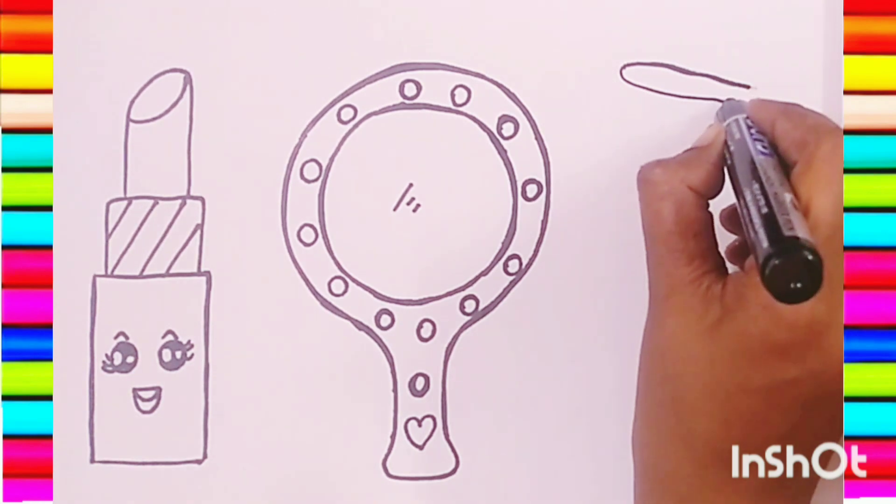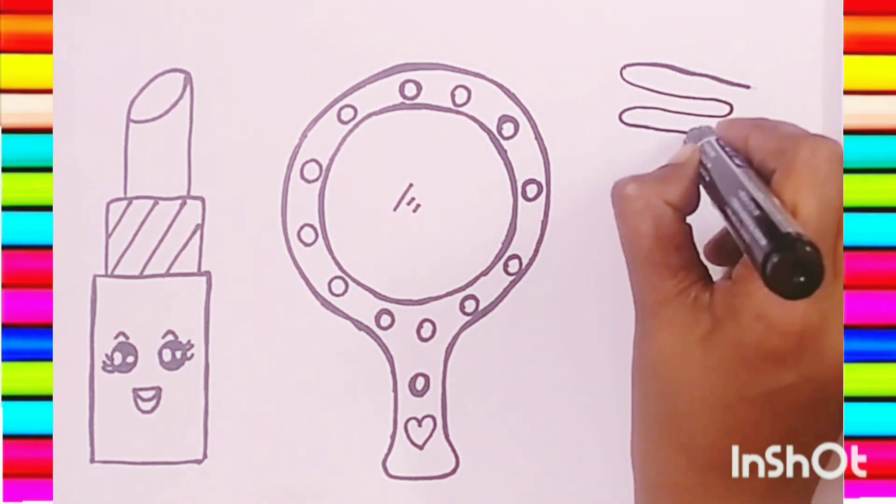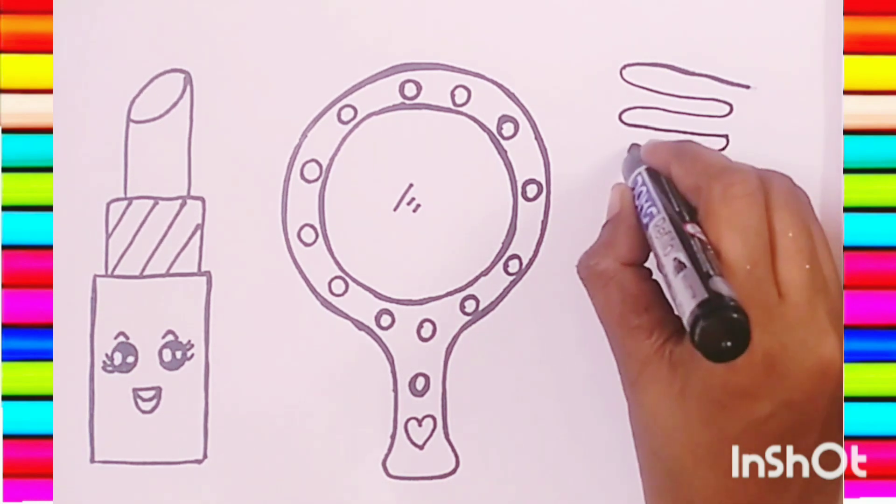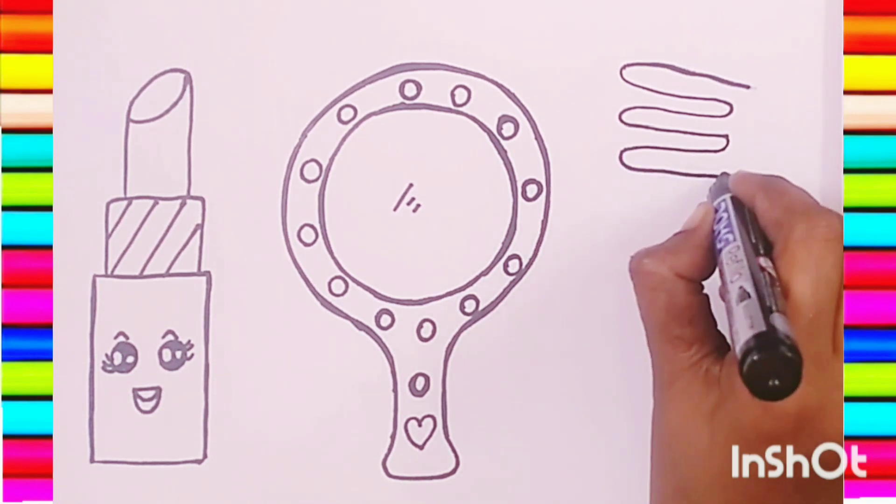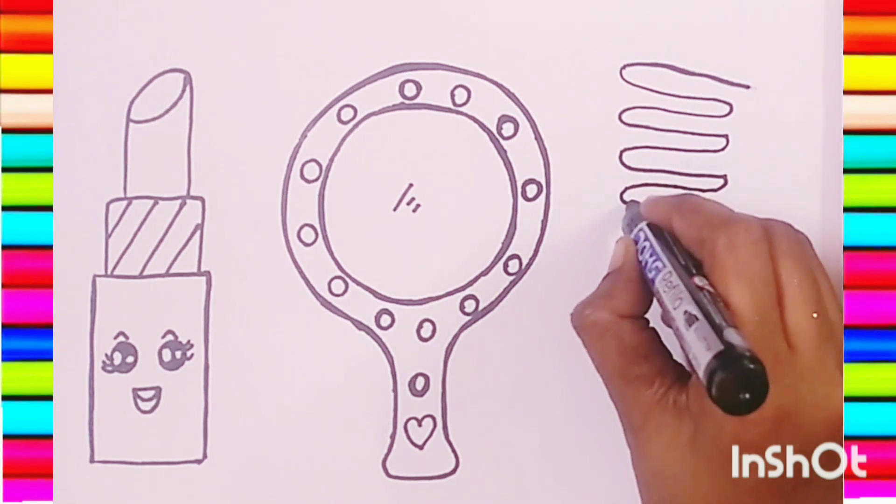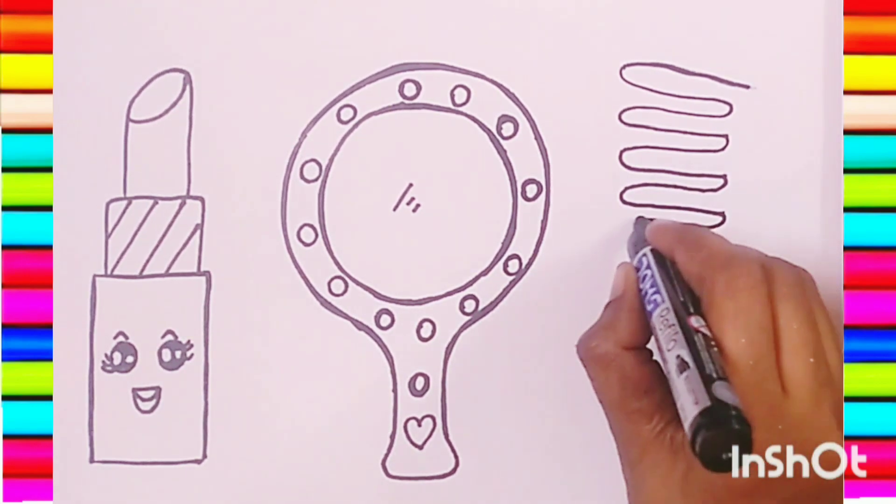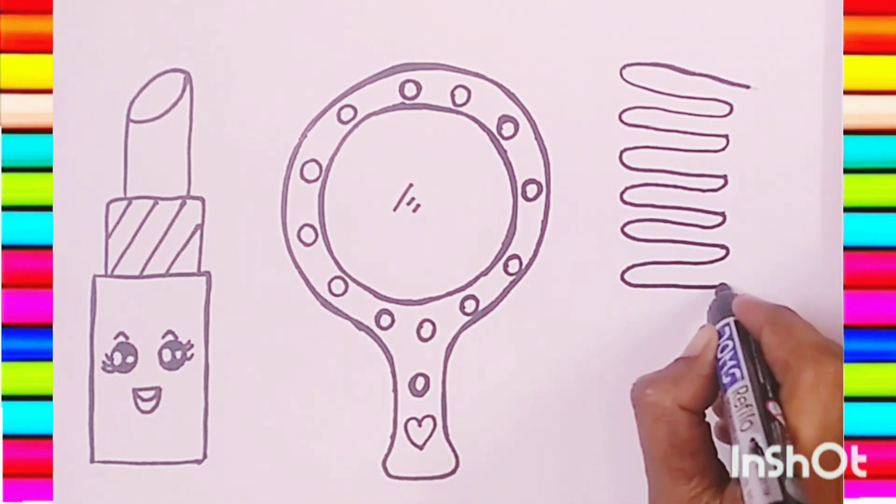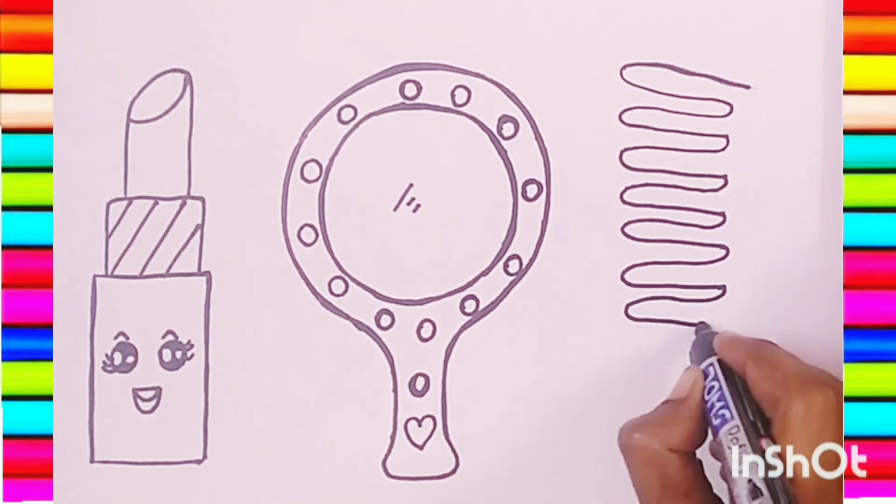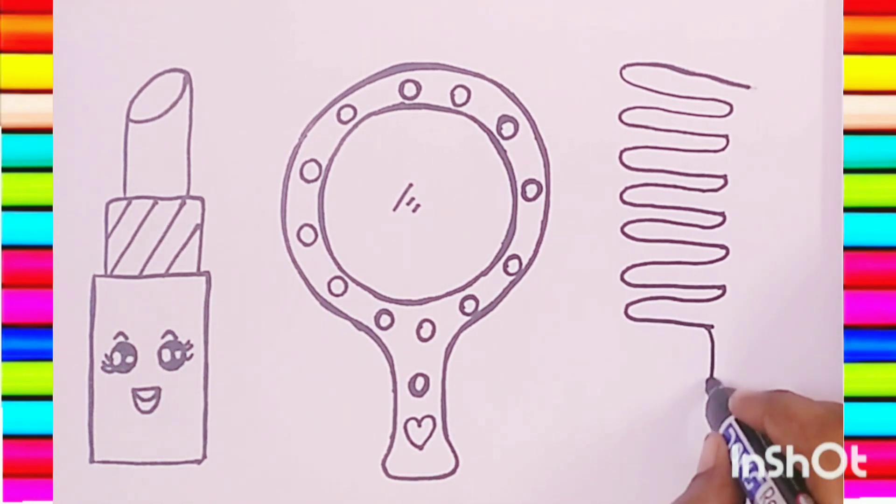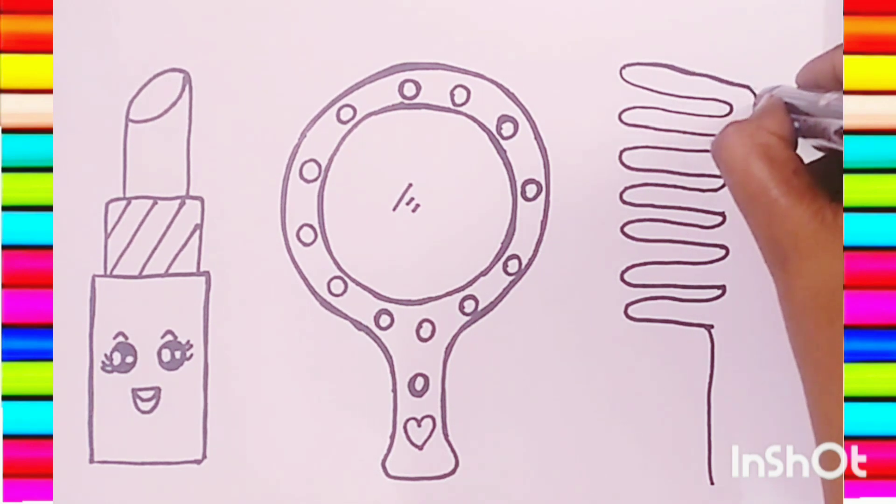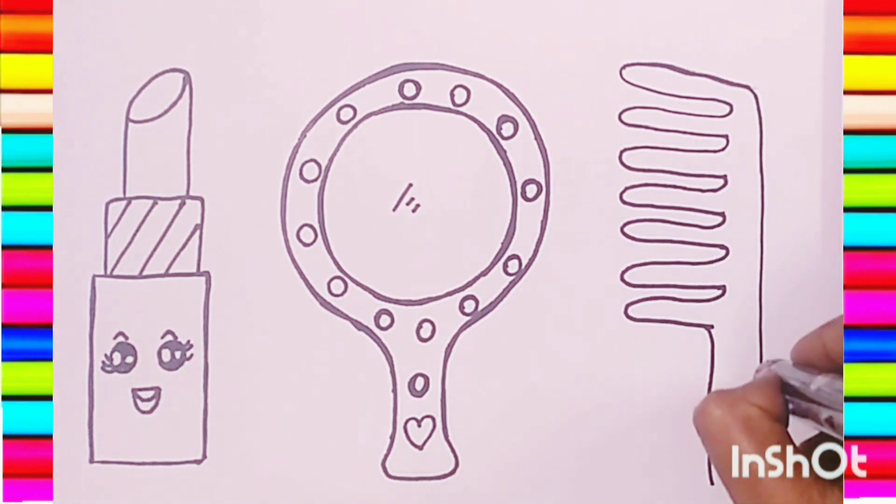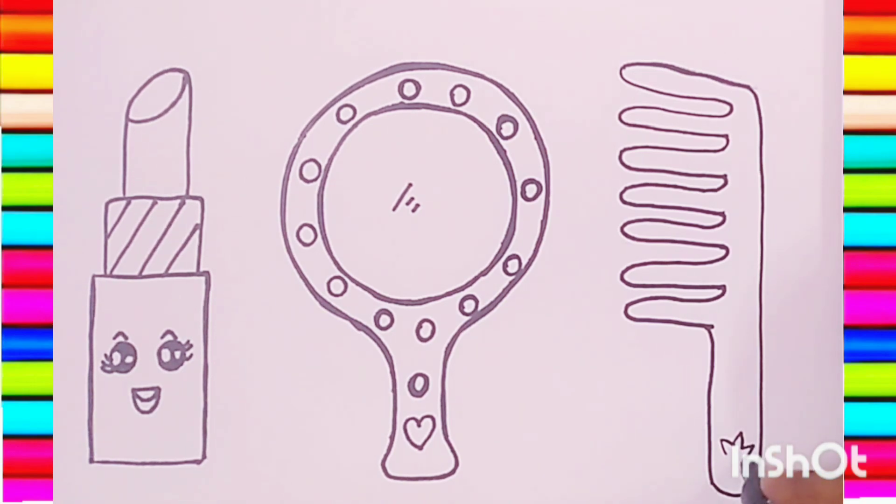I'm going to draw a comb. Try to draw in a same set. Draw a little star in it.